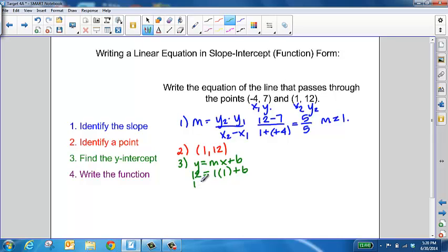Then you're just going to work through solving your equation for b. After you subtract 1 from both sides, you end up with a y-intercept of 11.